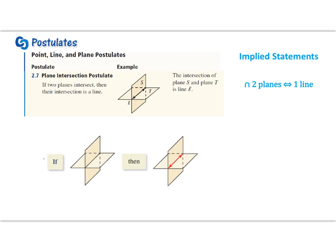So what we're looking for here is if two planes intersect – so that's my image – then their intersection is a line. So I just draw a line where the two planes intersect.